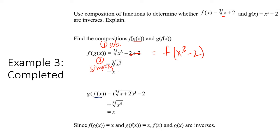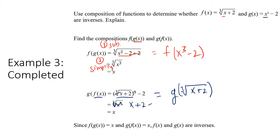The cube root of x³ simplifies to x¹ = x, because 3 divided by 3 is 1. Now for g ∘ f(x): substitute f(x) = the cube root of (x + 2) into g, so g(f(x)) = (the cube root of (x + 2))³ − 2. Cubing a cube root cancels them out, leaving x + 2 − 2 = x. Since both compositions equal x, these two functions are inverses of each other.